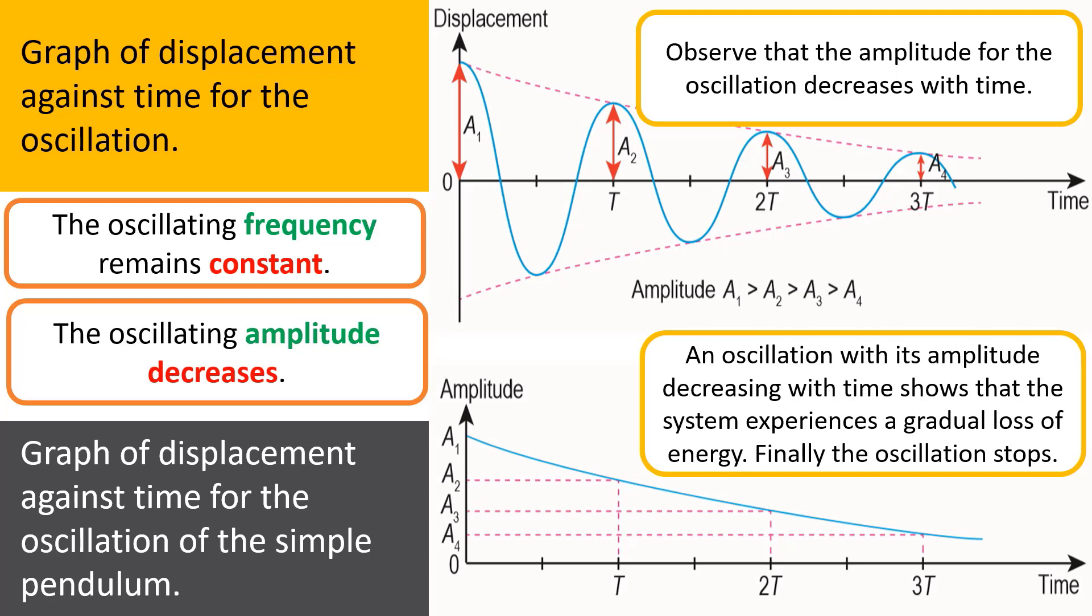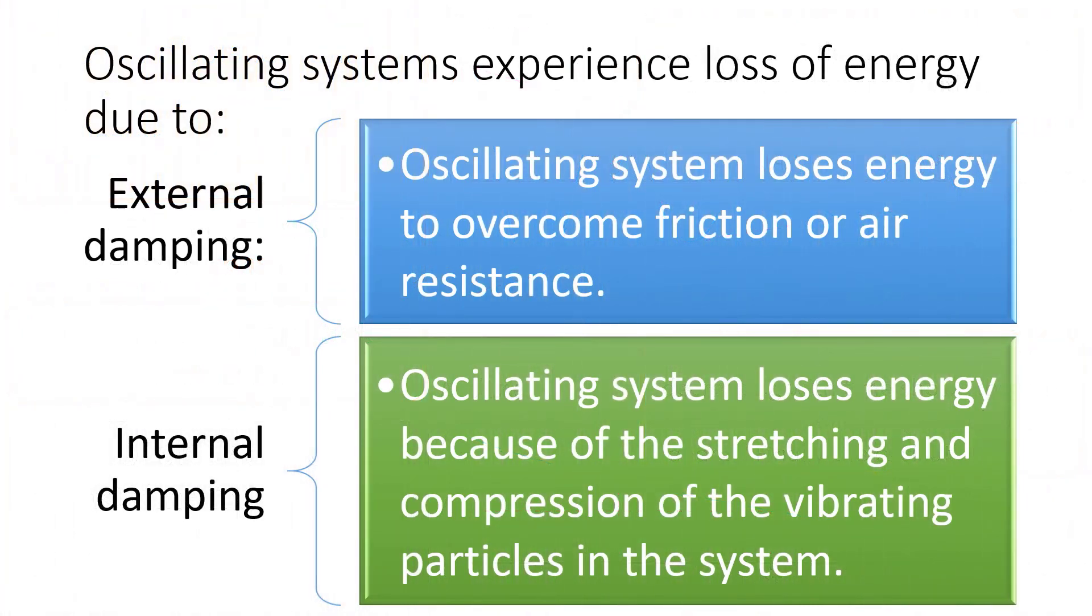Next, we'll be looking at the oscillating system experiencing loss of energy. Why is there loss of energy? Loss of energy is due to external damping. What is external damping? An oscillating system loses energy to overcome friction or air resistance. External damping is the loss of energy due to friction. Internal damping is the second one, which means energy is lost because of the stretching and compression of the vibrating particles. External means external factor, and internal is due to the spring itself or the system itself.